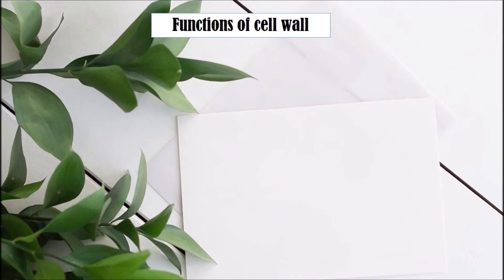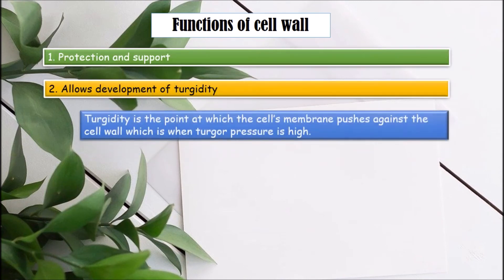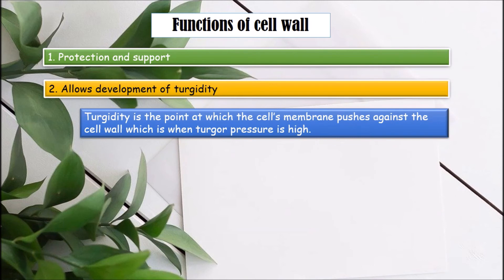Functions of cell wall. First, provide protection and support. Cell walls give cells rigidity and strength, offering protection against mechanical stress. Second, allows development of turgidity. Turgidity is the point at which the cell's membrane pushes against cell wall, which is when turgor pressure is high.